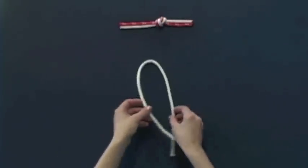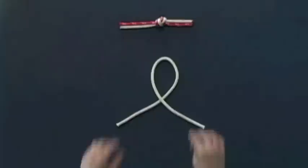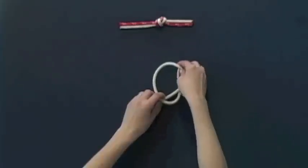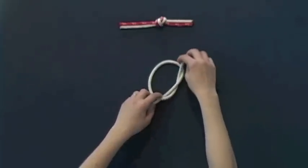First, you will take your piece of rope and cross it over itself. Then you will take one end and pull it under. This is like the start of tying your shoes.